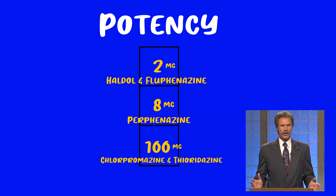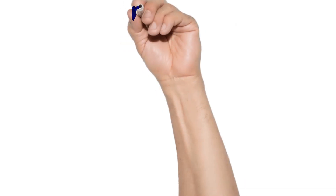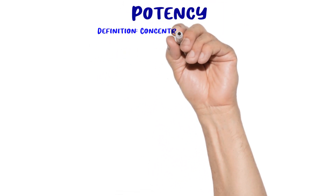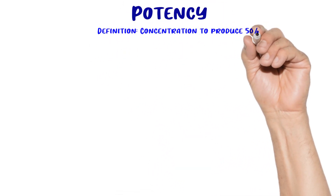First generation antipsychotics have a particular emphasis on potency since we divide them into high potency and low potency first gen. But of course, potency is a concept that applies to all the drugs that we use. So let's get to it.